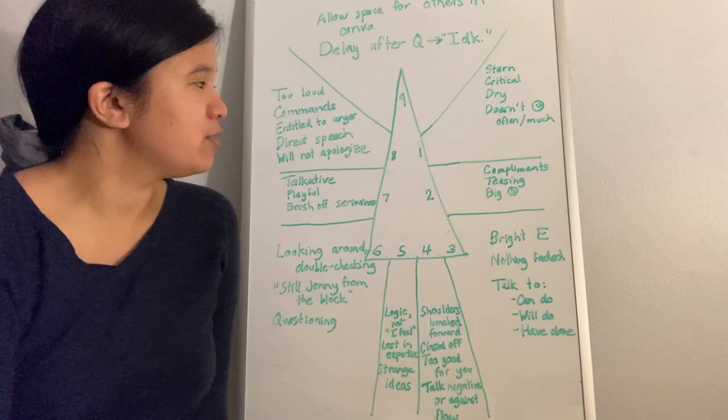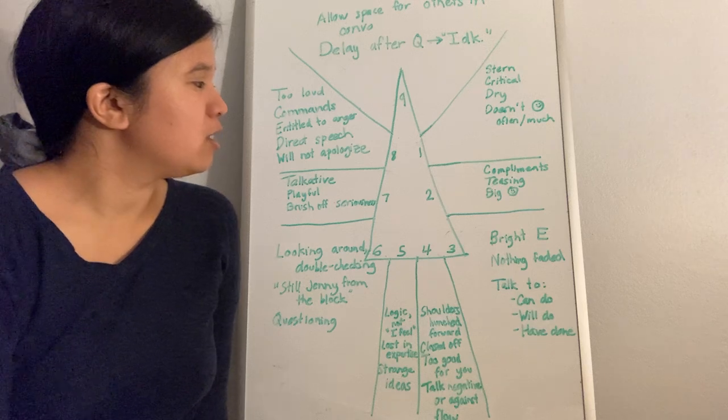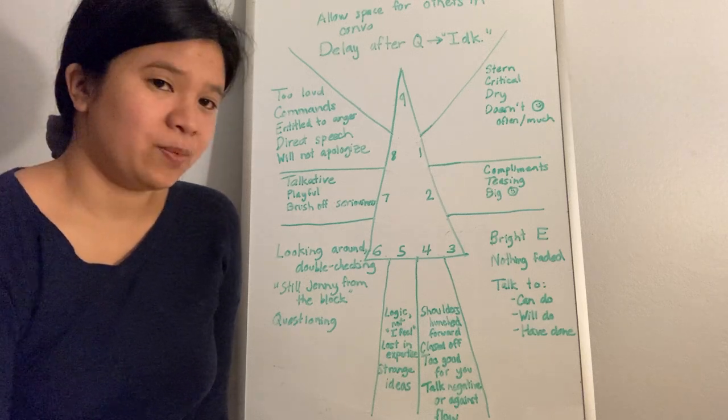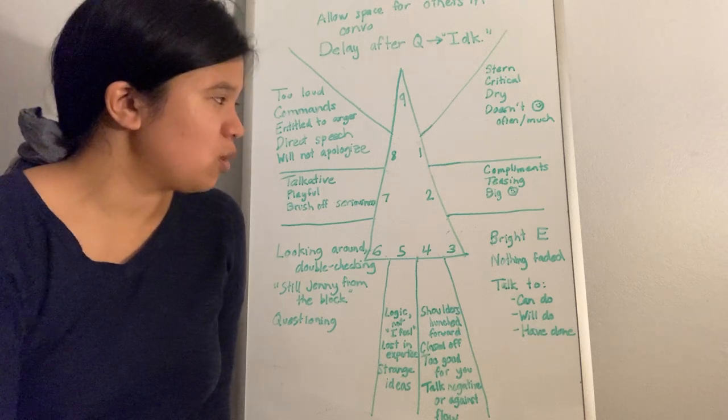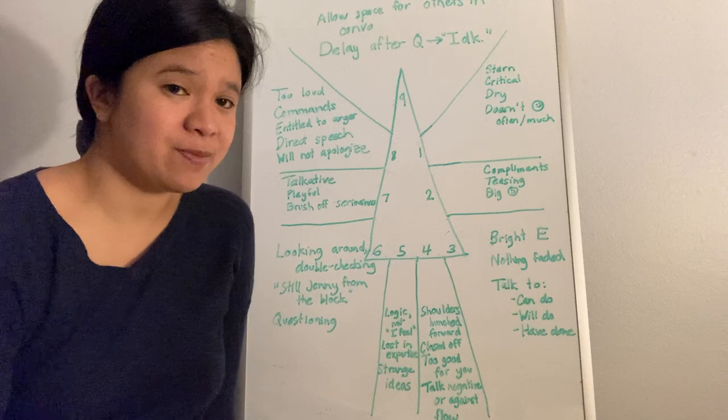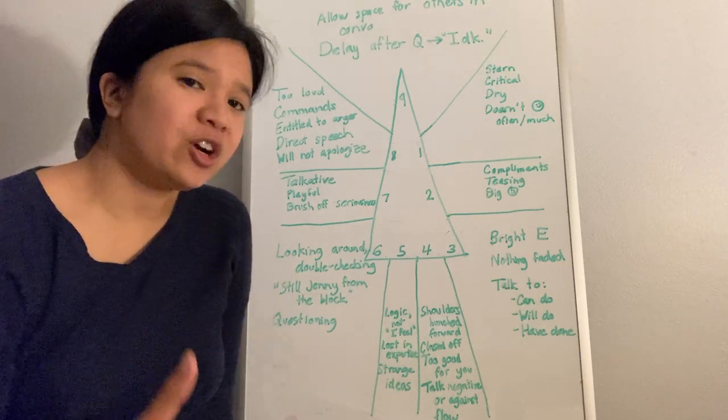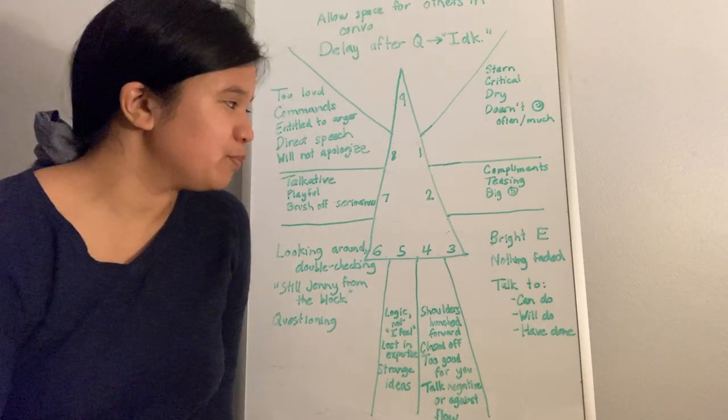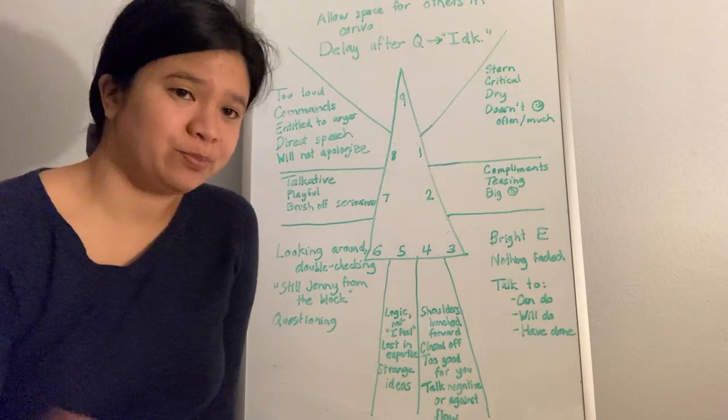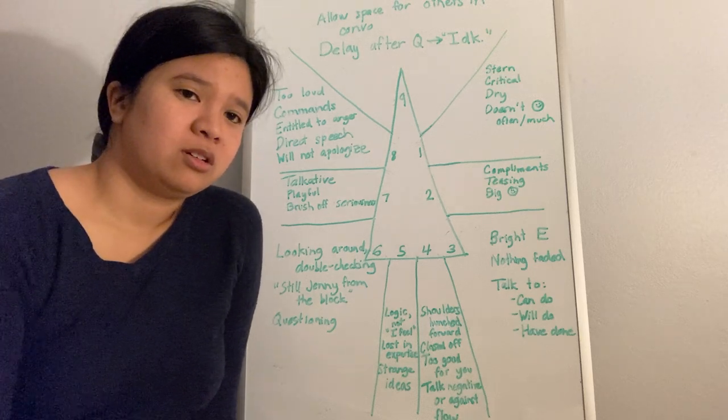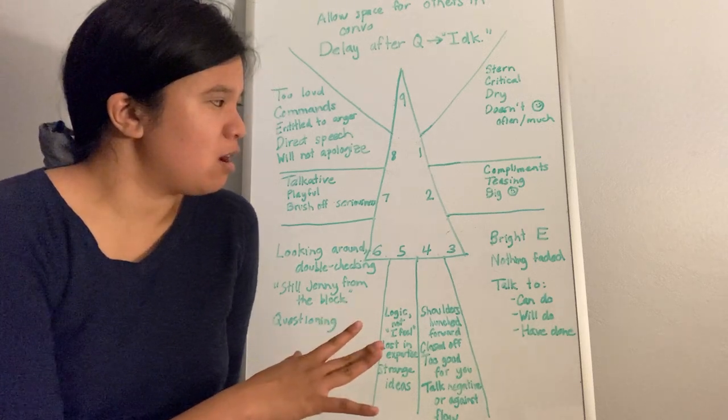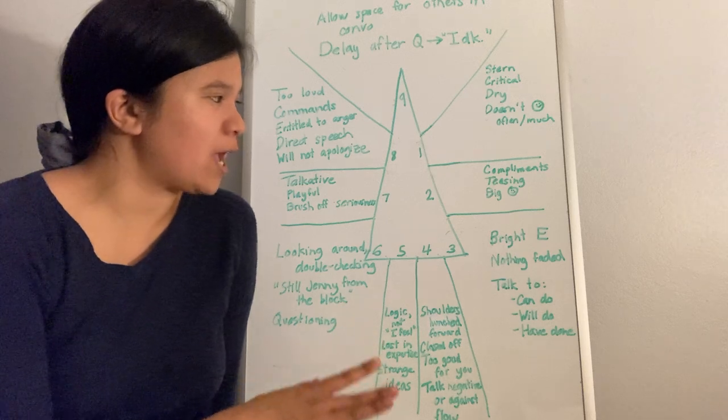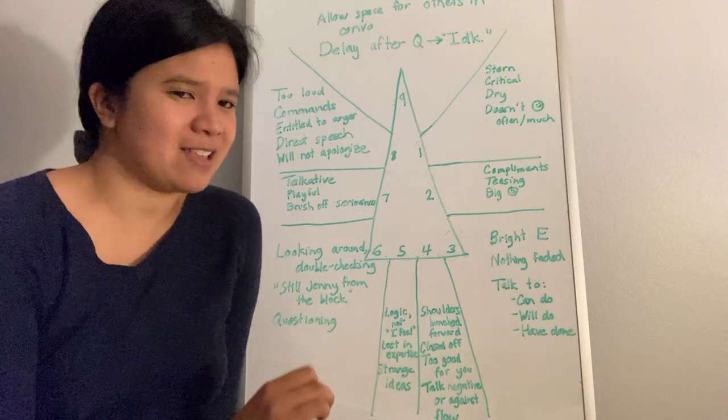Let's start with type 2 in the heart triad. 2s will give a lot of compliments. They are flirty, teasing people with big smiles. You'll generally see this trend. What comes to mind is a co-worker I had who at least had a wing 2.